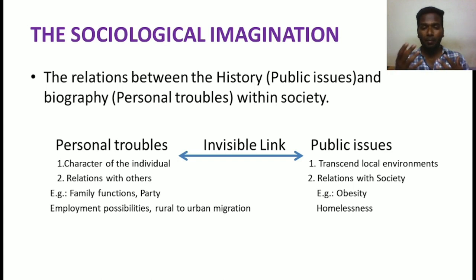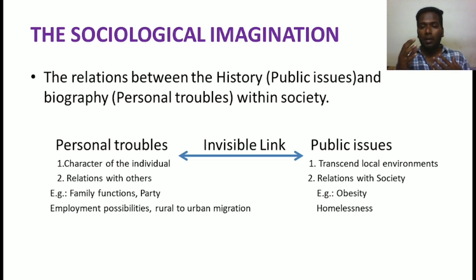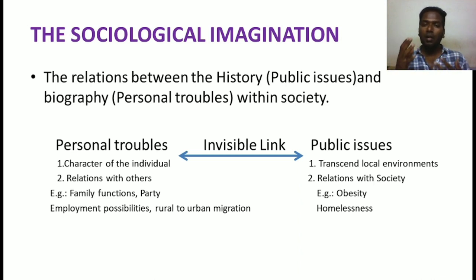The second example is homelessness. Because of rural-to-urban migration and lack of employment opportunities, people cannot get jobs. When there is no job, they suffer from poverty, and because of poverty there is homelessness. Homelessness as a public issue transcends the local environment and is related to society, whereas personal troubles are characteristics of the individual — such as how one individual influences another to consume junk food or attend social ceremonies and gain weight.